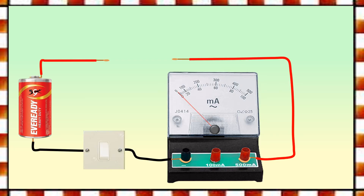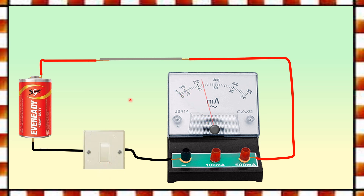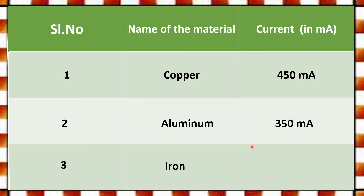Now I will fill the gap with the iron rod. All rods are made of different materials but have the same length and same cross-sectional area. Let us turn the switch on and see how much current is flowing. It is approximately 250-290 milli-amperes — the current has decreased further compared to the previous case.